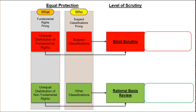There's some standard vocabulary that typically gets used to indicate the difference between the levels. At the rational basis level, the ends must be legitimate and the means must be reasonable. These terms are intended to convey a general attitude of deference to the legislature, as seen in Carolene Products. The ends don't have to be extraordinarily important, just legitimate — as opposed to something illegitimate, like animosity against a disfavored group.